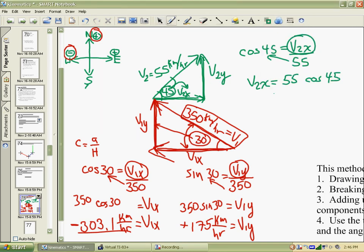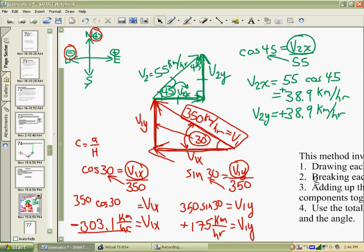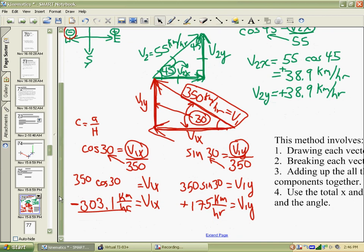It's a good thing you know about a 45 degree triangle with 90 - these are isosceles triangles, so the V2x and the V2y are both the same. You can work it out with sine 45, but you will get 38.9, trust me. We need to think of our directions again. V2x was east, so it is a positive. V2y was north, so again it's a positive number. So now we've completed step two, where we broke each vector up into x and y coordinate components. We've done that, now we're ready to move on to step three.